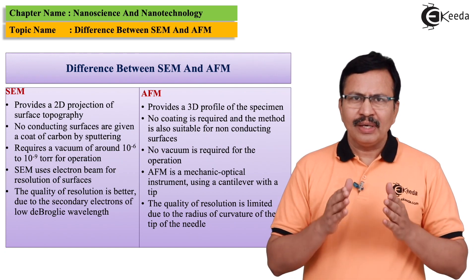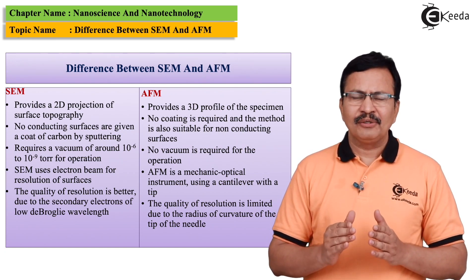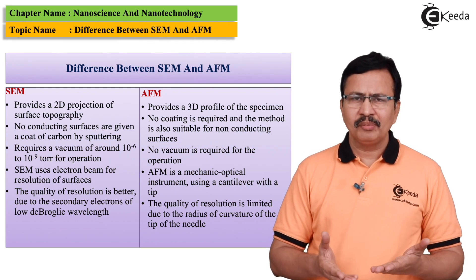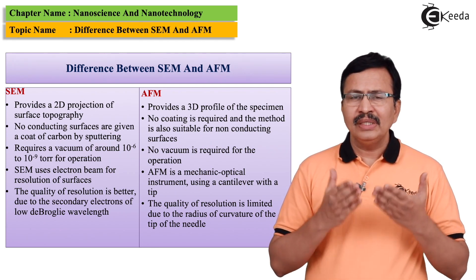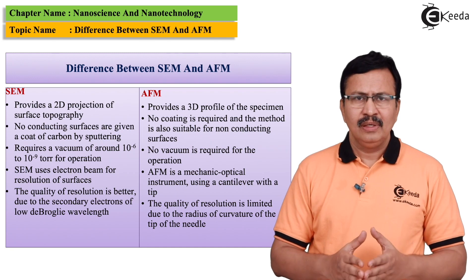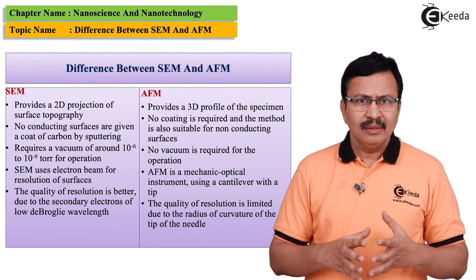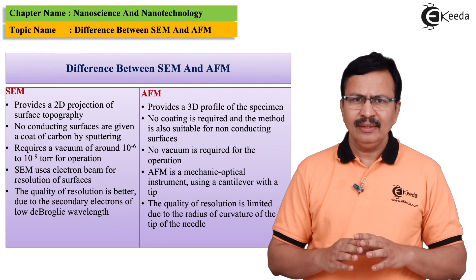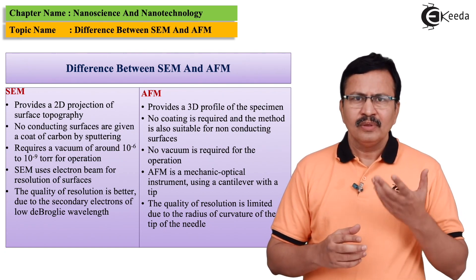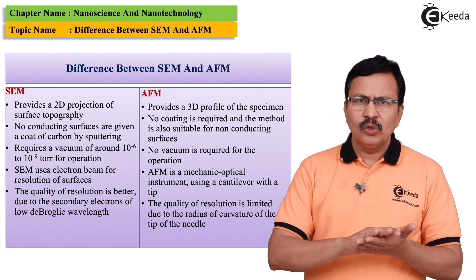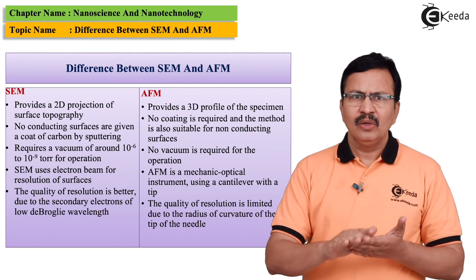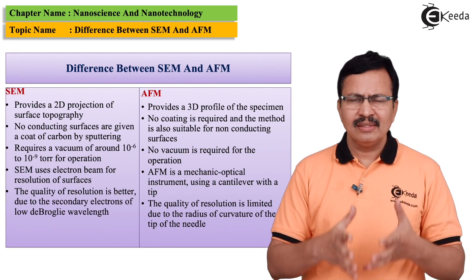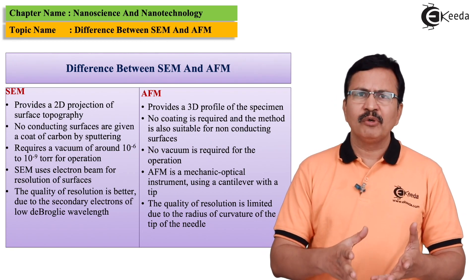Coming back to SEM — the scanning electron microscope — in the case of scanning electron microscopes, we need conducting samples. Does this mean that we cannot analyze a sample which is non-conducting? We can definitely do that. By giving a coat of carbon on a non-conducting surface, we can actually analyze these surfaces too with the help of SEM.